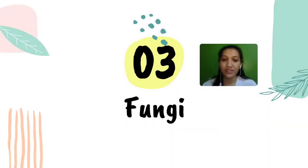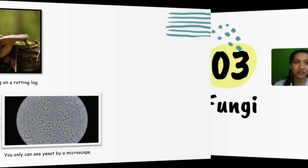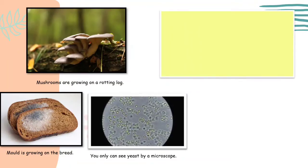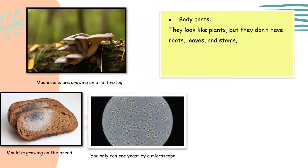Now let's discuss fungi. There are different kinds of fungi — for example, mushrooms, mold growing on bread, or yeast. Fungi may look like a plant, but the difference is they don't have roots, leaves, or stems.